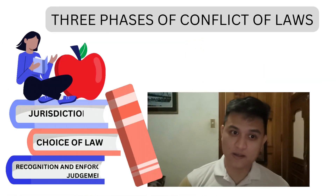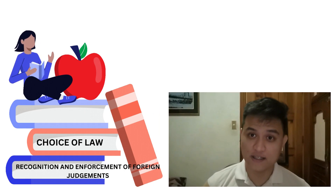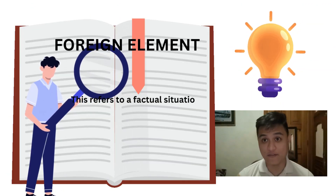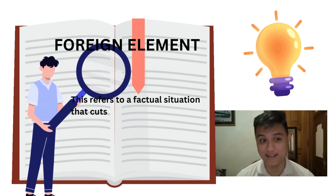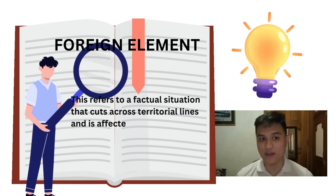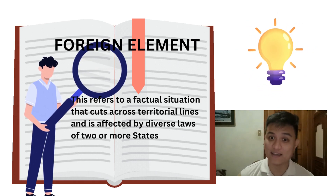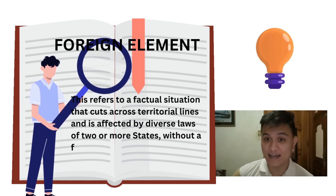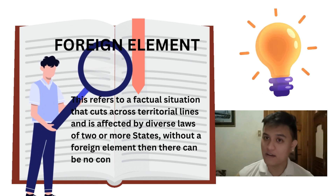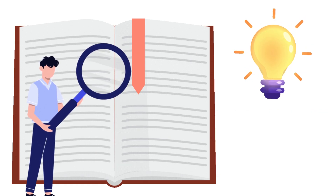For my part, I will be talking about the three phases of Conflict of Laws. But first, let's discuss what is a foreign element. This refers to a factual situation that cuts across territorial lands and is affected by diverse laws of two or more states. Without a foreign element, there can be no Conflict of Laws.